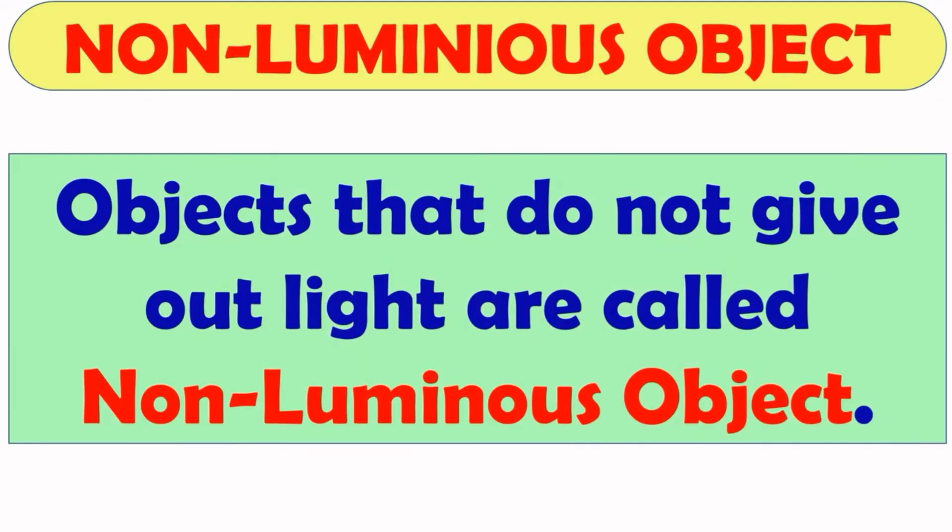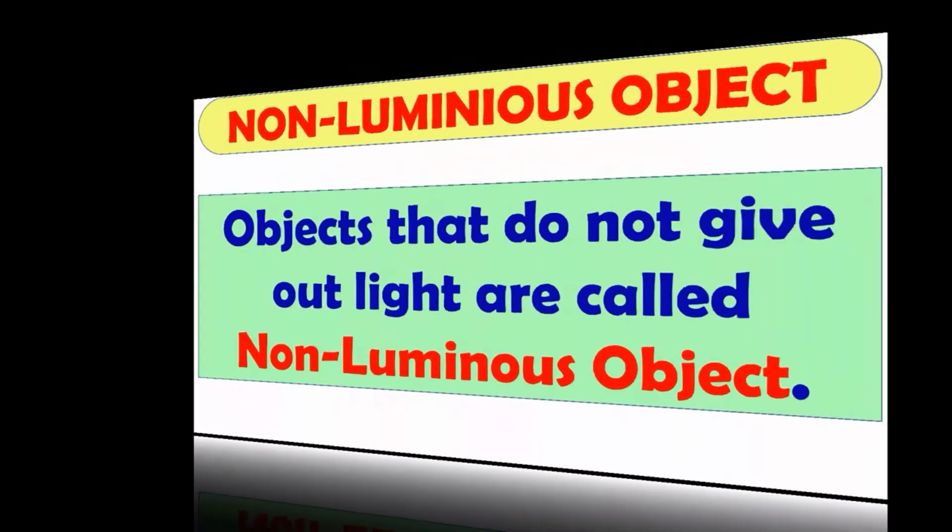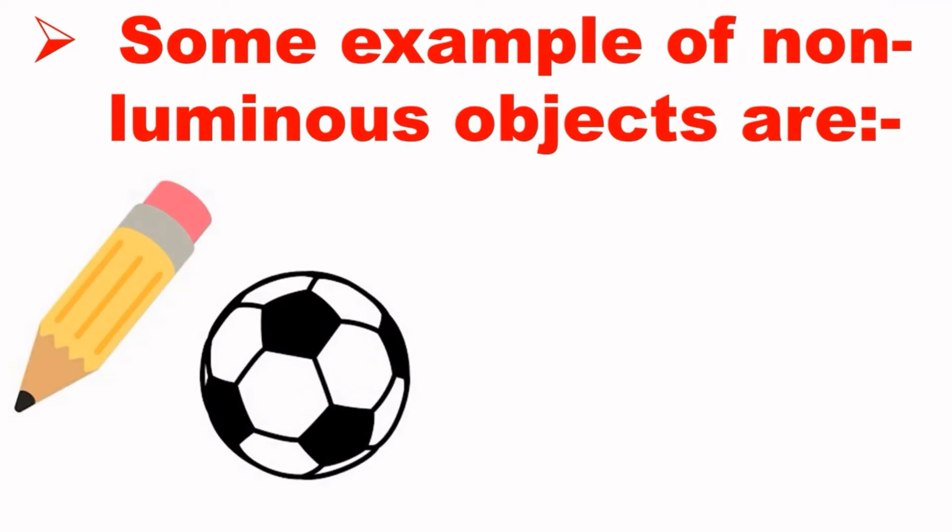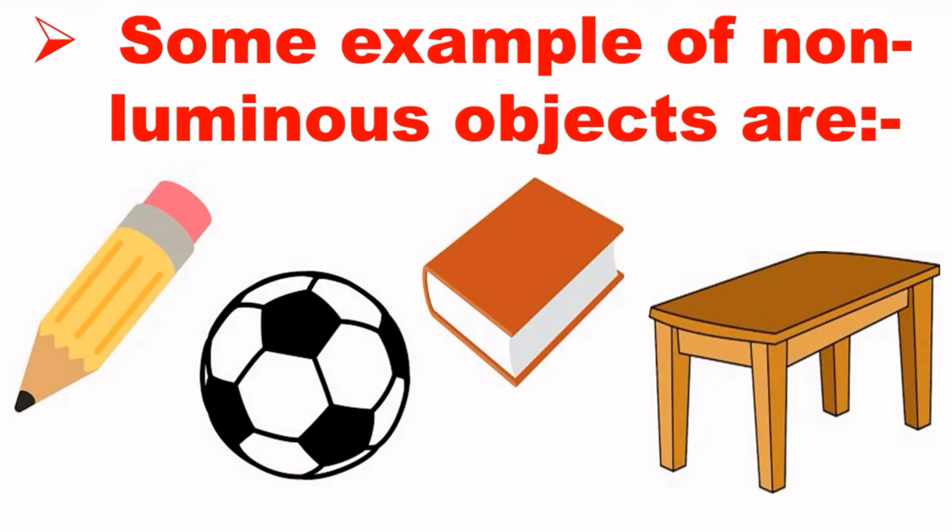Next is non-luminous object. Objects that do not give out light or emit light are called non-luminous objects. Let us see some examples of non-luminous objects. They are pencil, football, books, tables, stones, bed, chair, etc. We can see all these non-luminous objects when light falls on it.